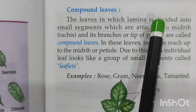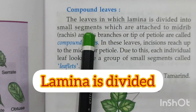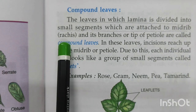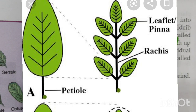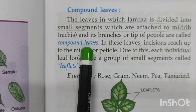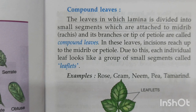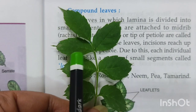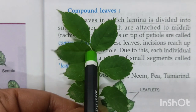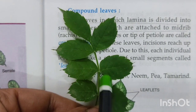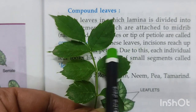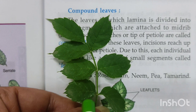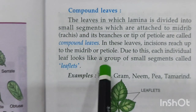The leaves in which the lamina is divided into small segments attached to the midrib — known as the rachis — and its branches at the tip of the petiole are called compound leaves. These small leaflets are touching the midrib. In the beginning this is a complete single leaf, and then it gets broken down and branched into small leaflets — that is how it is known as a compound leaf.